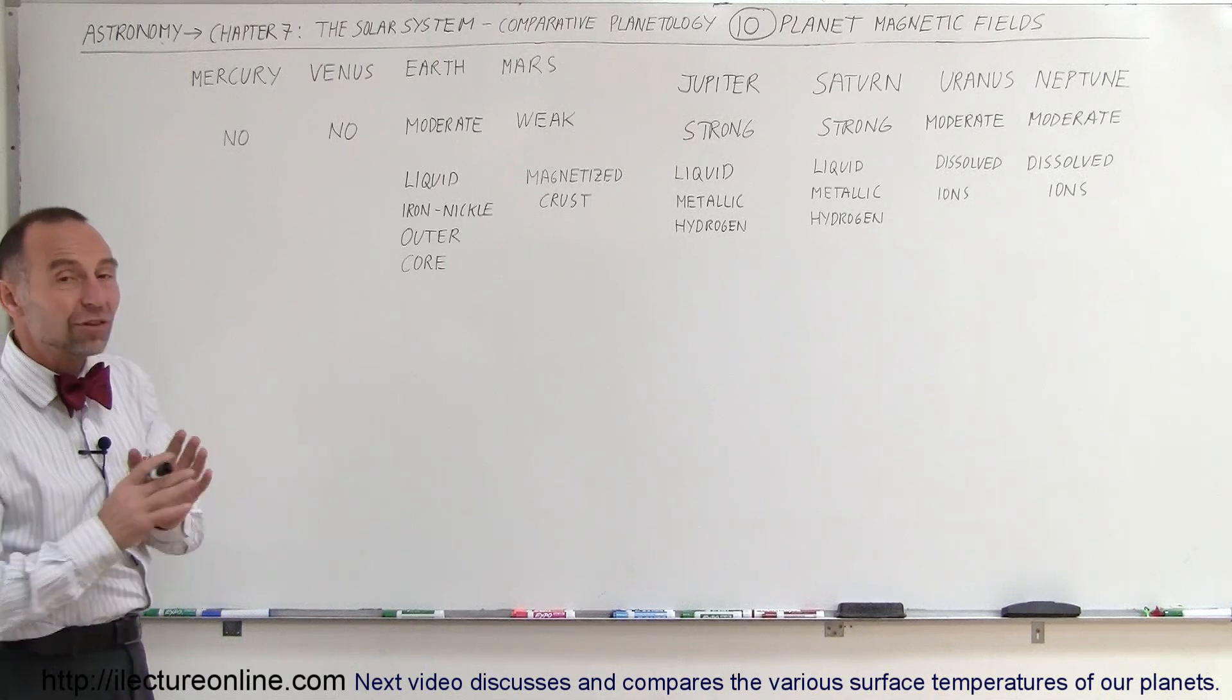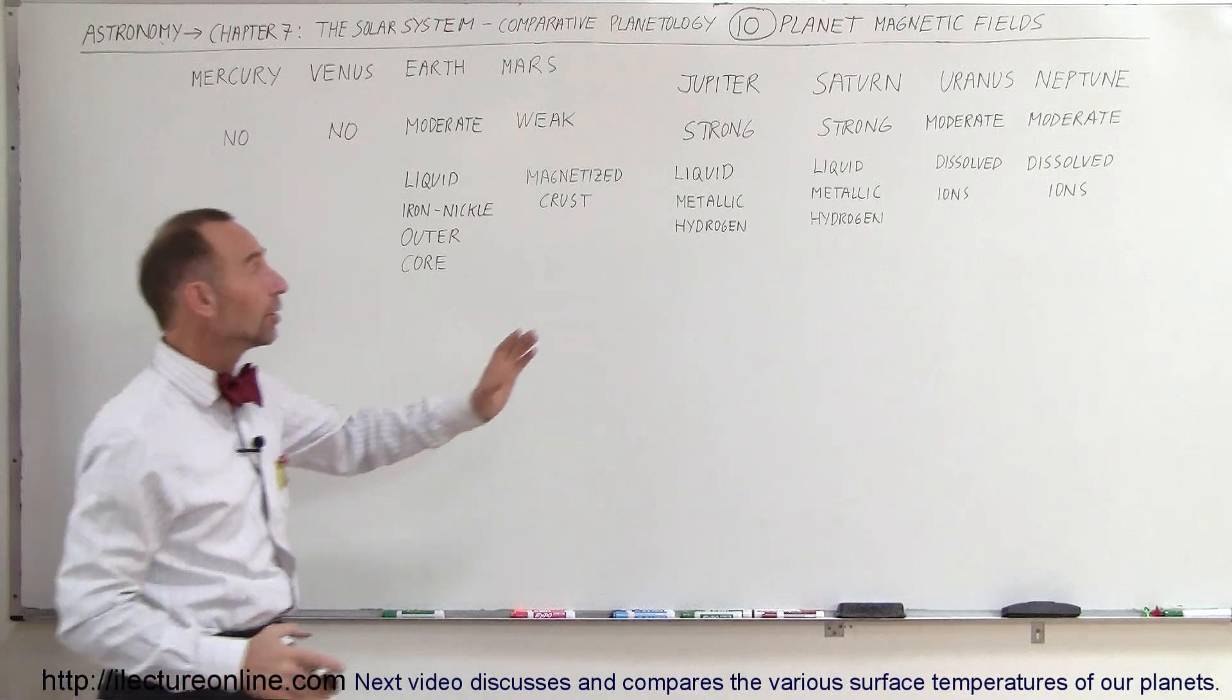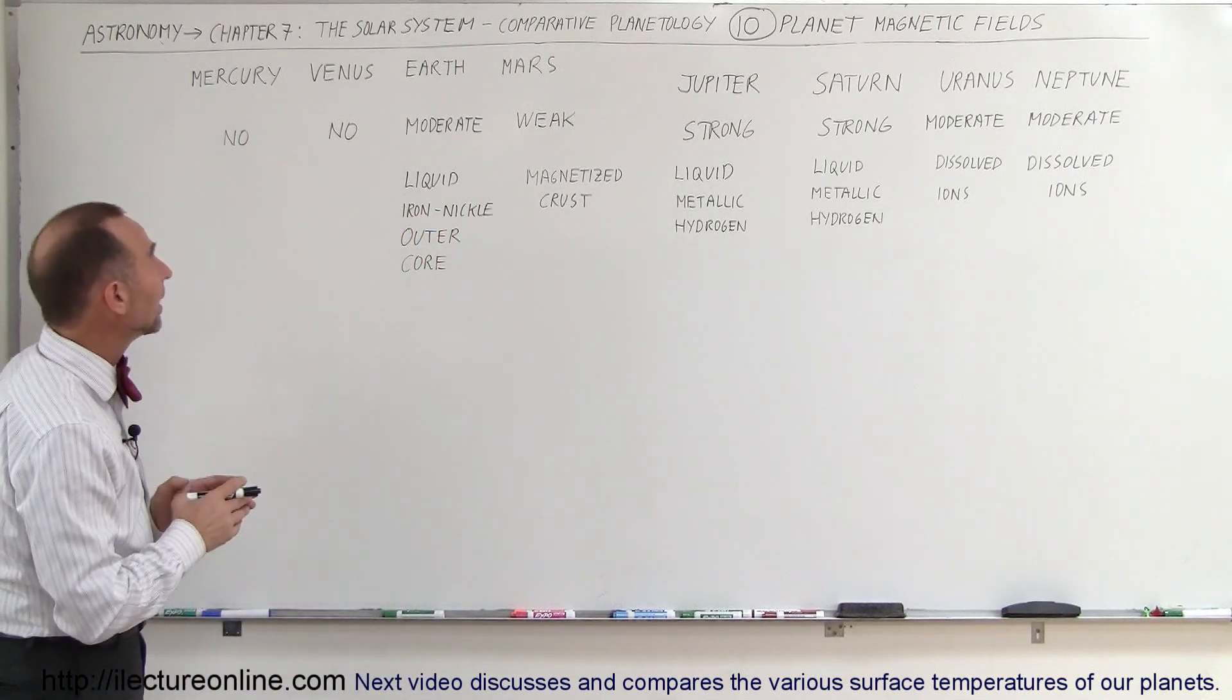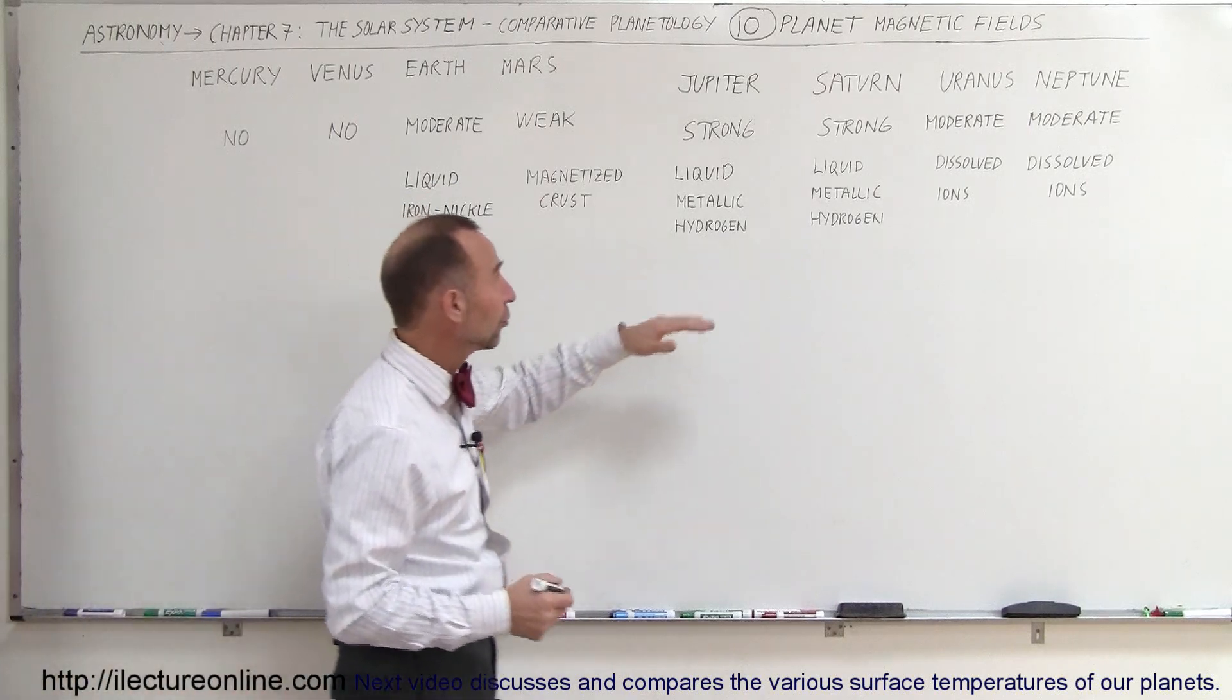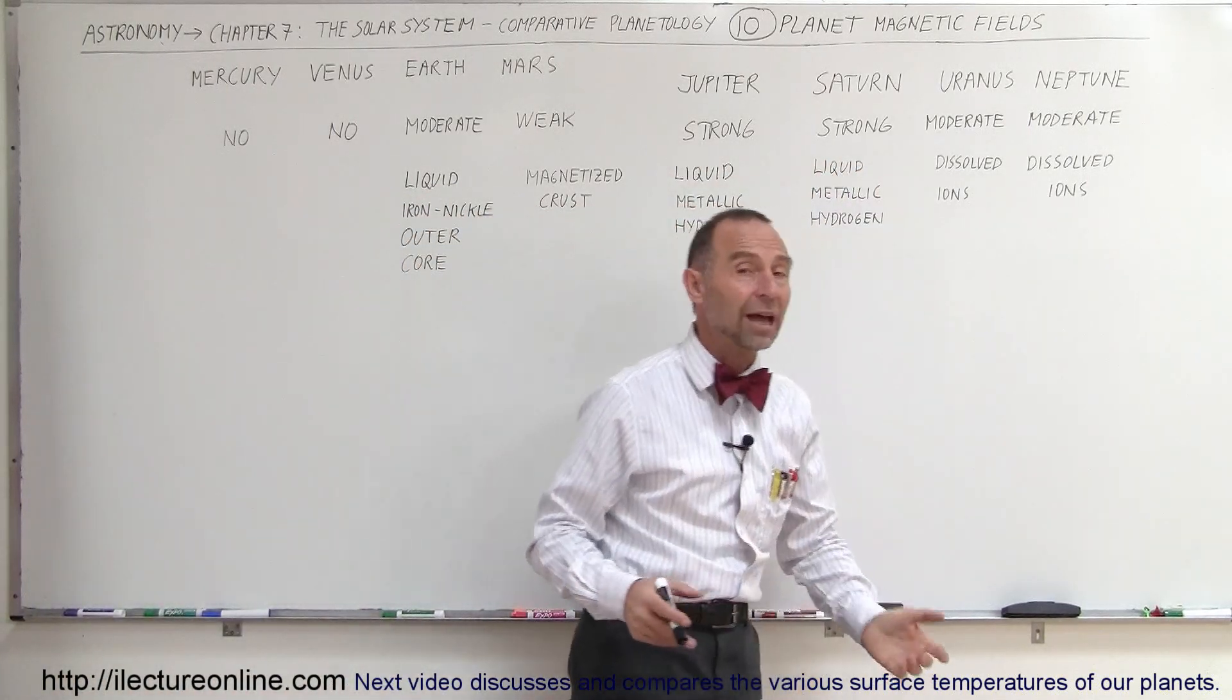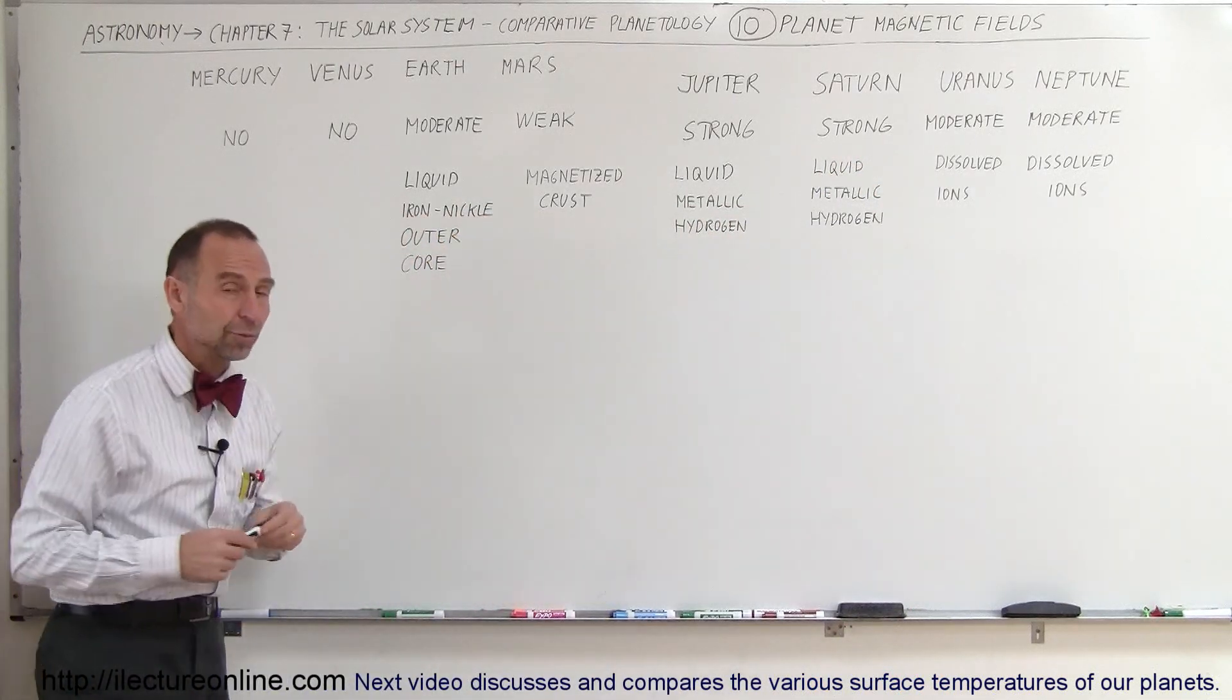And again, you're going to see a big difference between the magnetic fields of the terrestrial planets versus the magnetic fields of the gas planets. First of all, when we look at the terrestrial planets, they either have no magnetic field or either a moderate or weak magnetic field, as opposed to gas planets. The first two very big gas planets have very strong magnetic fields and Uranus and Neptune have moderate magnetic fields. And when we say moderate, they're still stronger than the Earth's magnetic field.